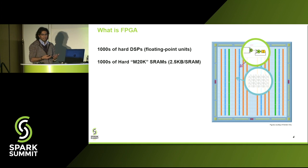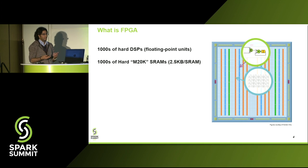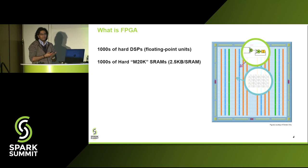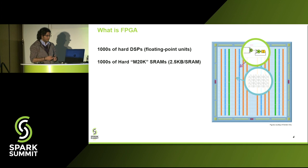Along with this, the fabric also consists of thousands of hardened SRAMs. In the FPGA community, we call it the M20K block. Each of these is around 2.5 KB per SRAM, and along with the DSP, it is completely distributed on the fabric.